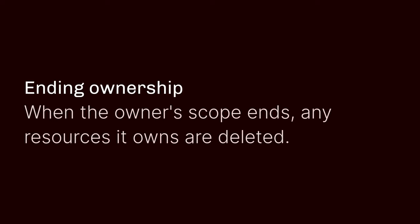The end of the lifecycle of an owner is its end. When the owner's scope ends, or when the owner becomes invalid — as we saw with the assignment case — any resources that it owns are deleted. In the assignment case it's slightly different because ownership has transferred, and once there is no owner for the data, that data is deleted.